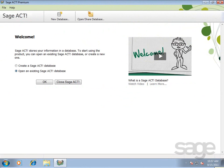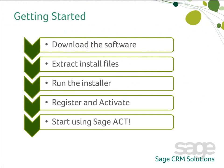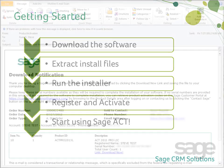Congratulations on your purchase of Sage Act! To get started using the program, you'll have to complete the following actions: download the software and installation package saving the files to your computer, extract or unpack the program and installation files, run the Act installer, register and activate the product, and then start using Sage Act. After completing this video, you'll be able to complete each of these steps.